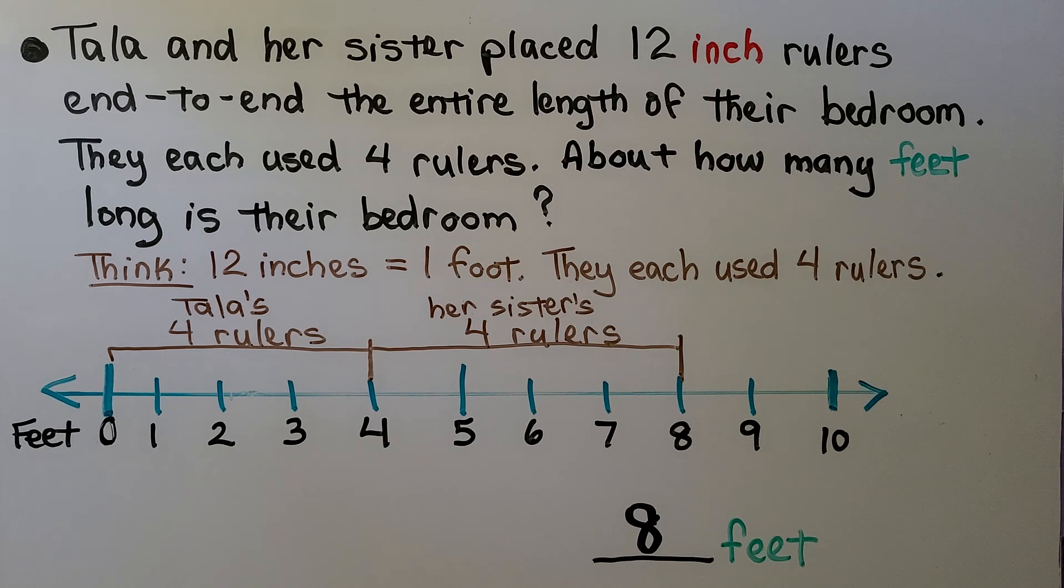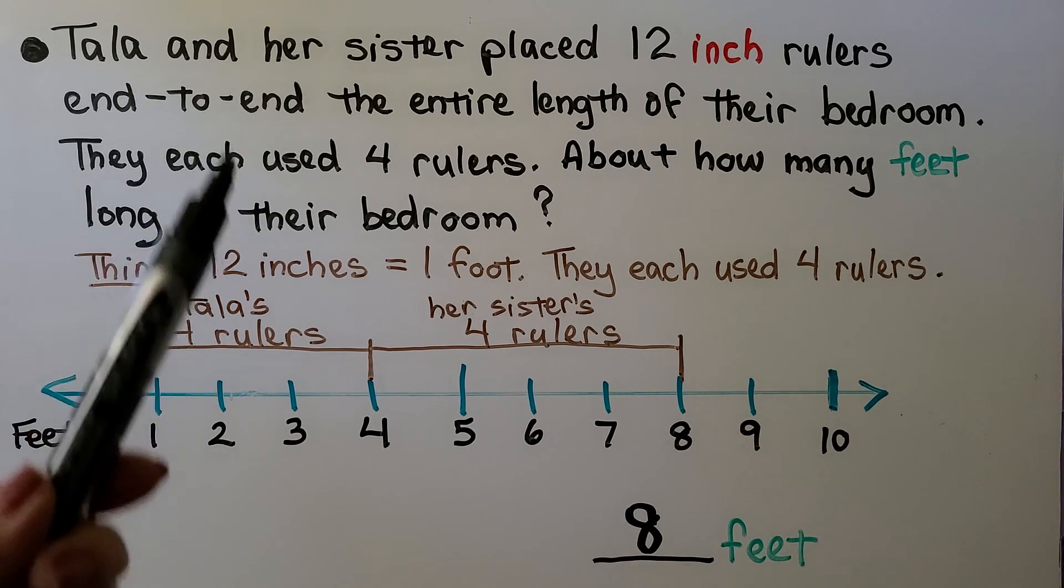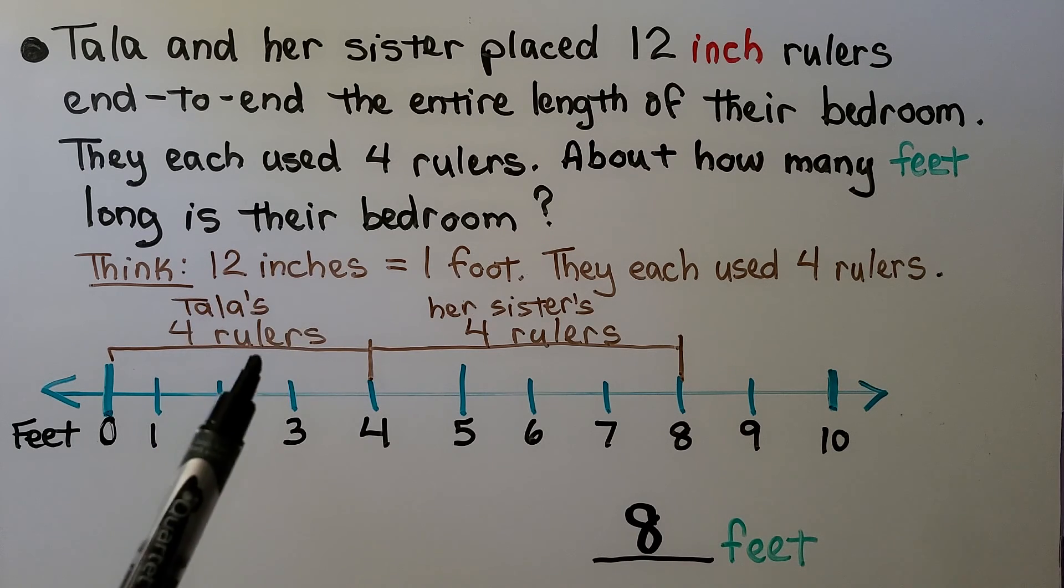This was actually a doubles fact. We had 2 people, each using a 4. 4 plus 4 is 8. And because they're 12-inch rulers, it's 8 feet.